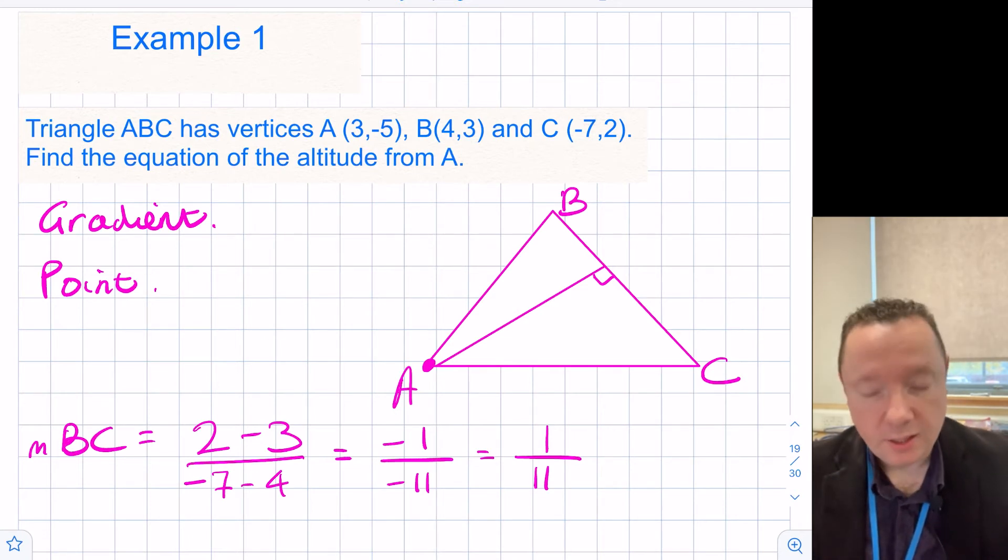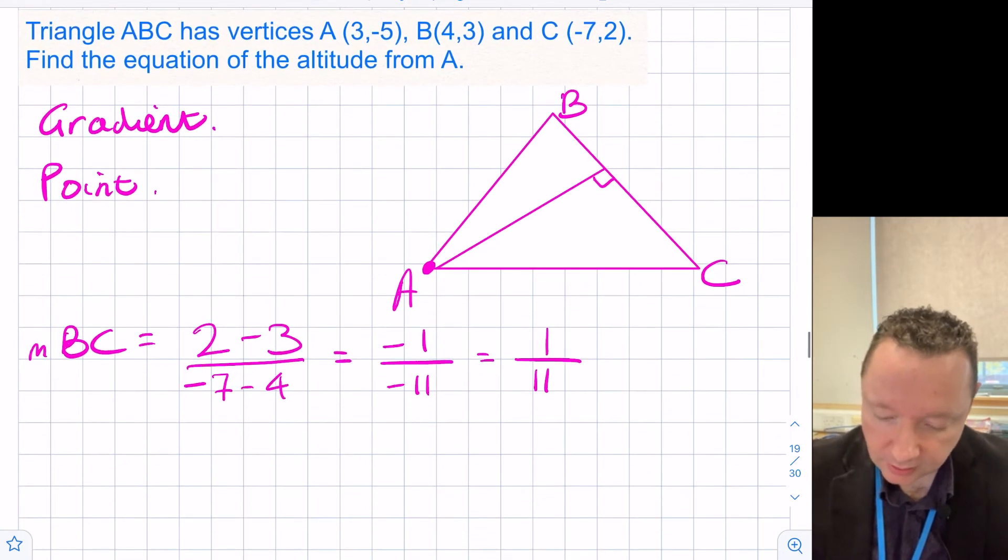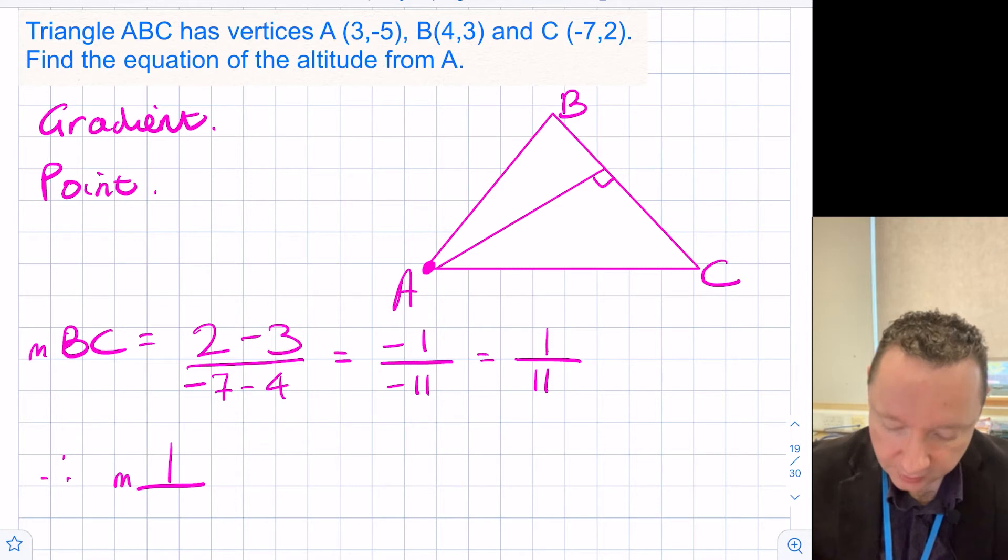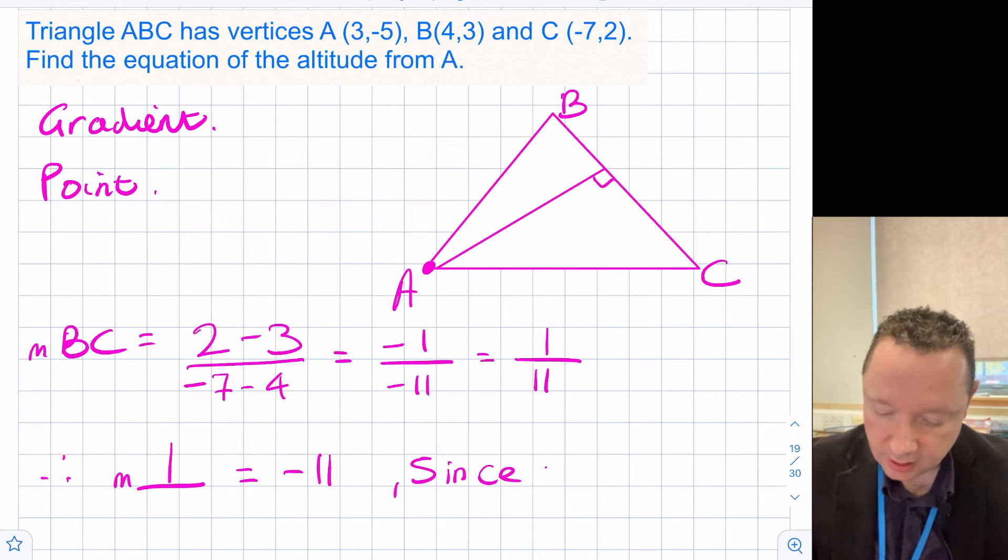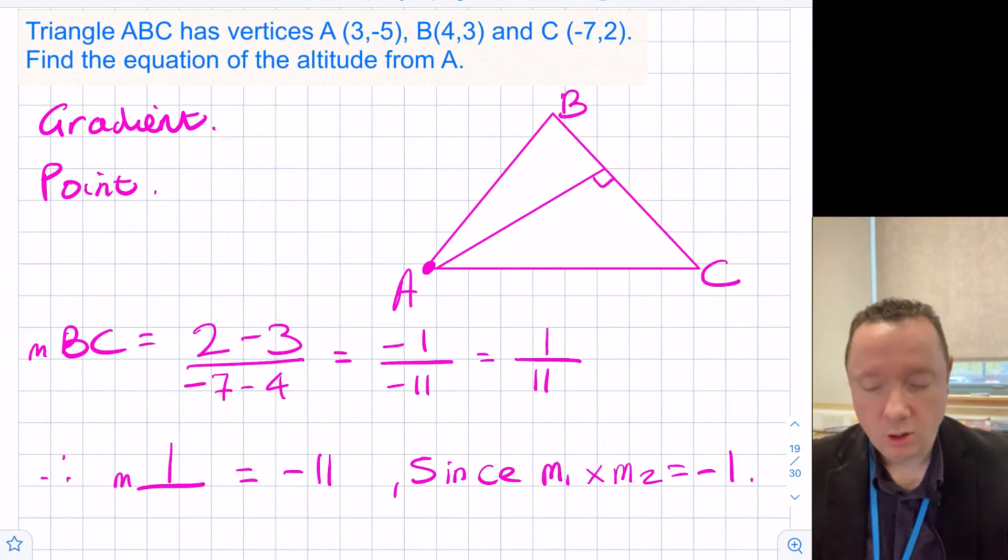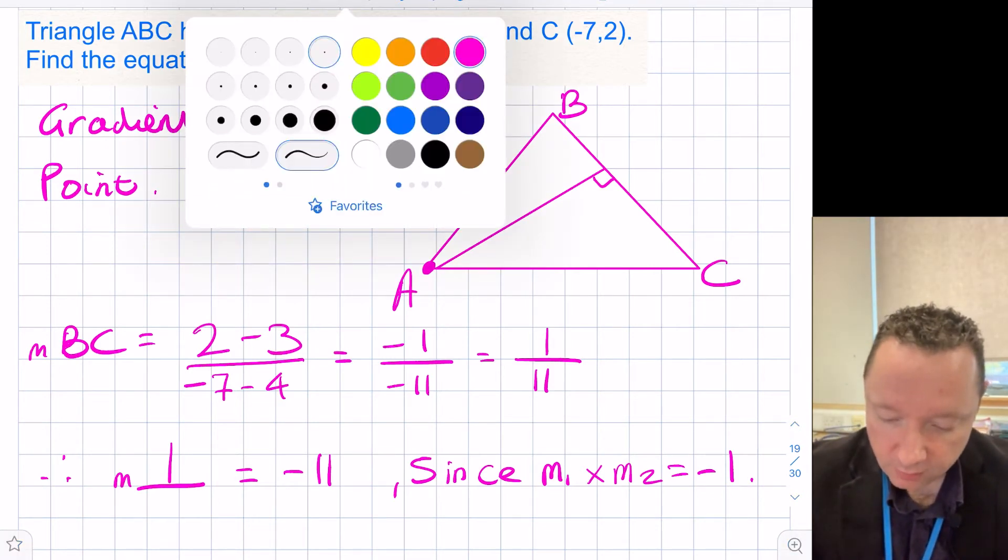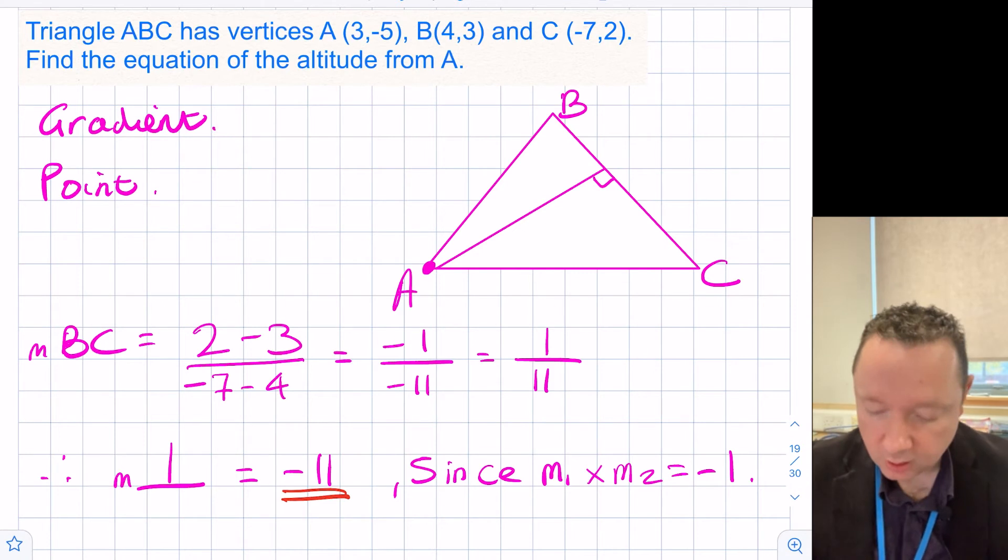So we know we're going to BC, and since it's an altitude, therefore, the gradient of the perpendicular equals -11, because M1 times M2 must equal -1. So we've now got our gradient, let's just highlight that with a red mark. So that's what we need.